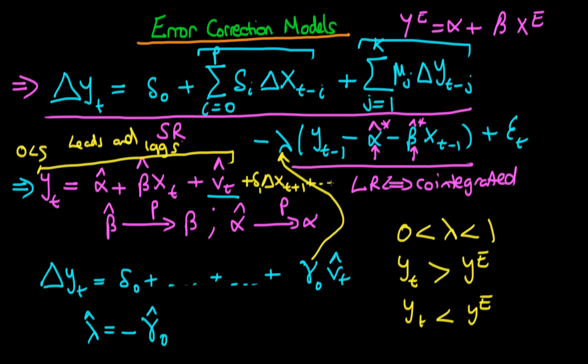So the idea here is that we could use leads and lags estimator to estimate the parameters alpha and beta.